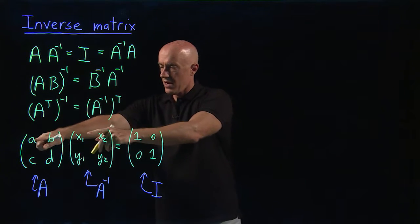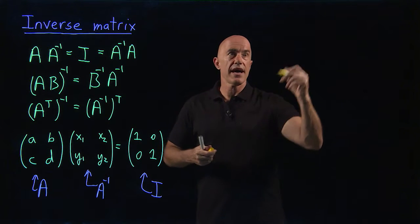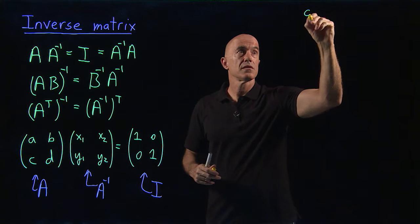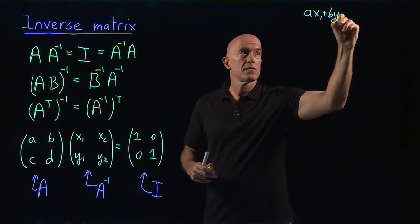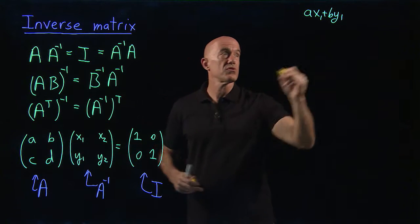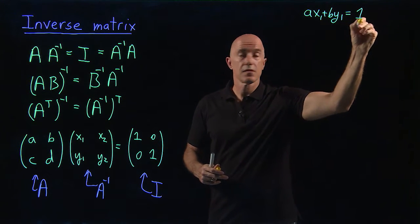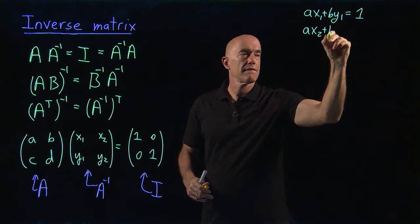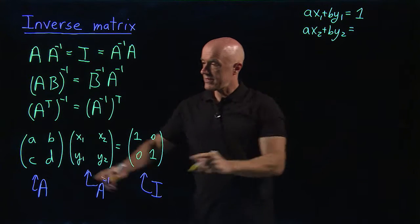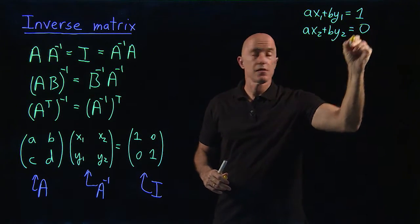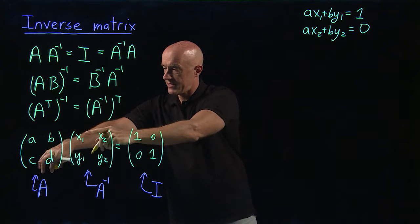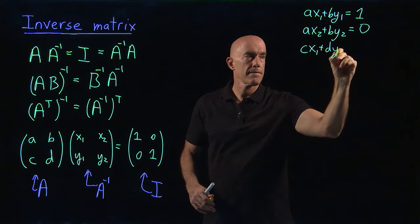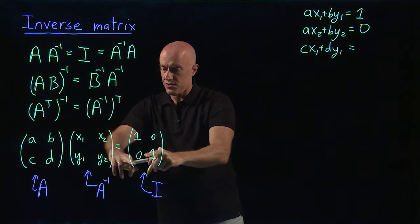So we use matrix multiplication. So we have ax1 plus by1. ax1 plus by1 is equal to 1. And then we have ax2 plus by2. And what is that equal to? That's equal to 0. Then in the second row we have cx1 plus dy1. And that one is equal to 0.